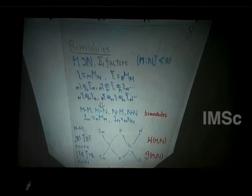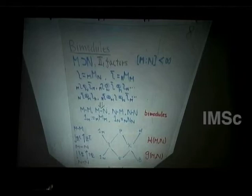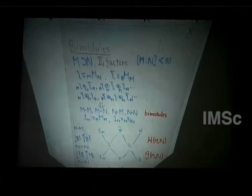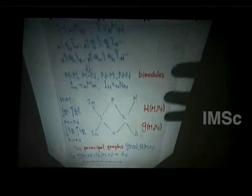Considering every possible tensor product over M or N starting from ι and ι-bar, you get M-M, M-N, N-M, and N-N bimodules. This is not quite a tensor category, since you cannot take the tensor product of arbitrary pairs, but if you choose the right leg you can — it's a kind of tensor category with two units: M as an M-M bimodule and N as an N-N bimodule.